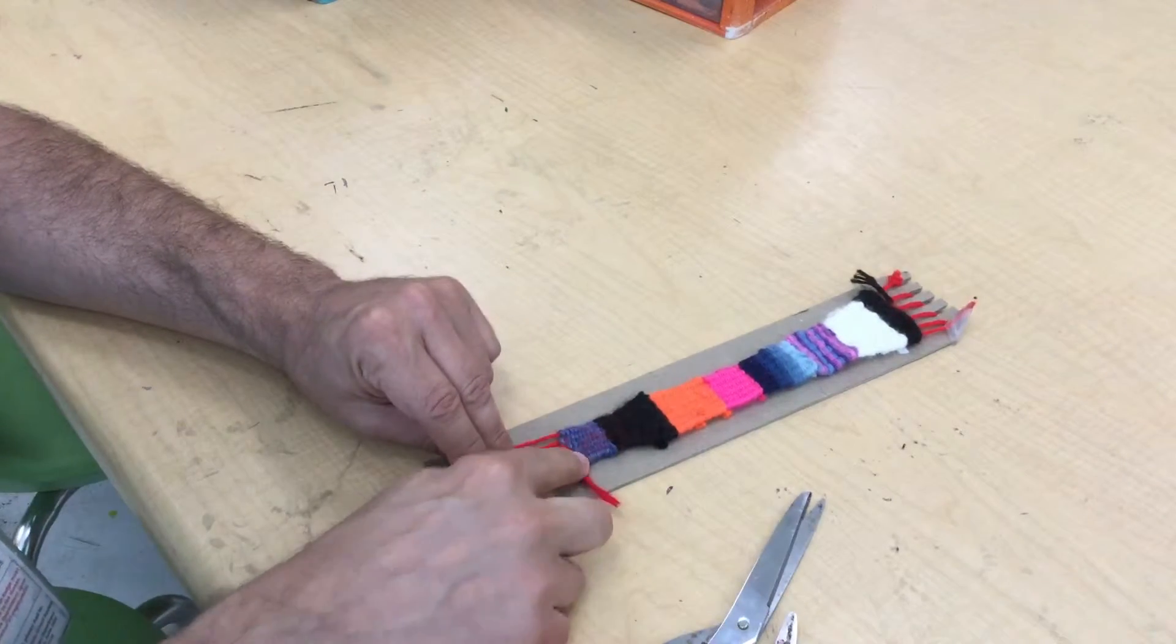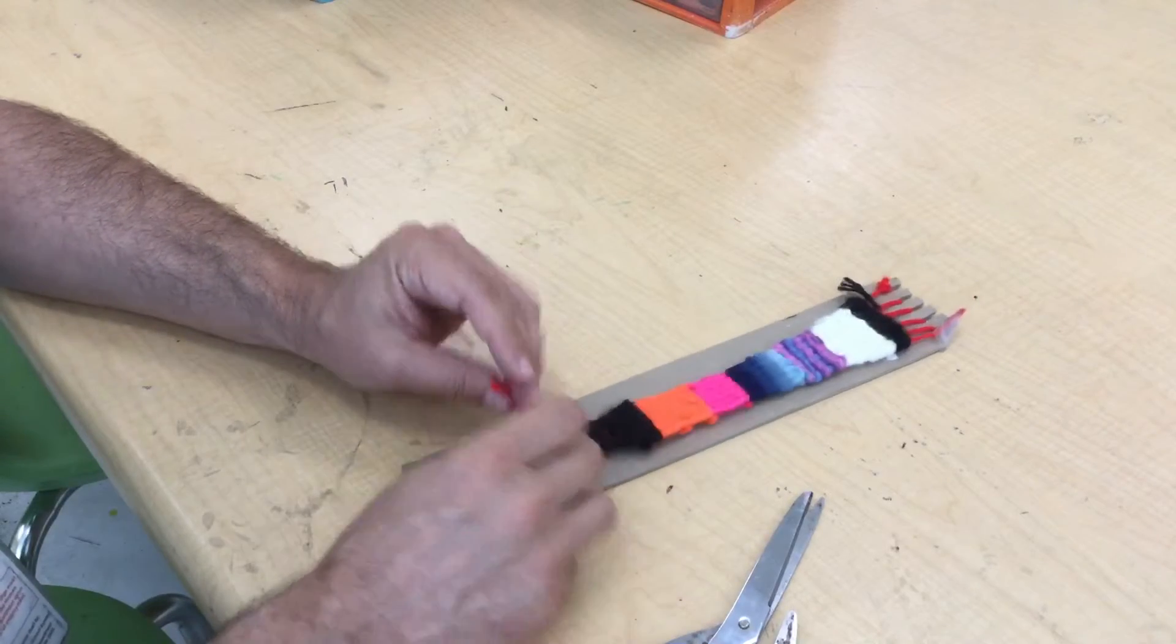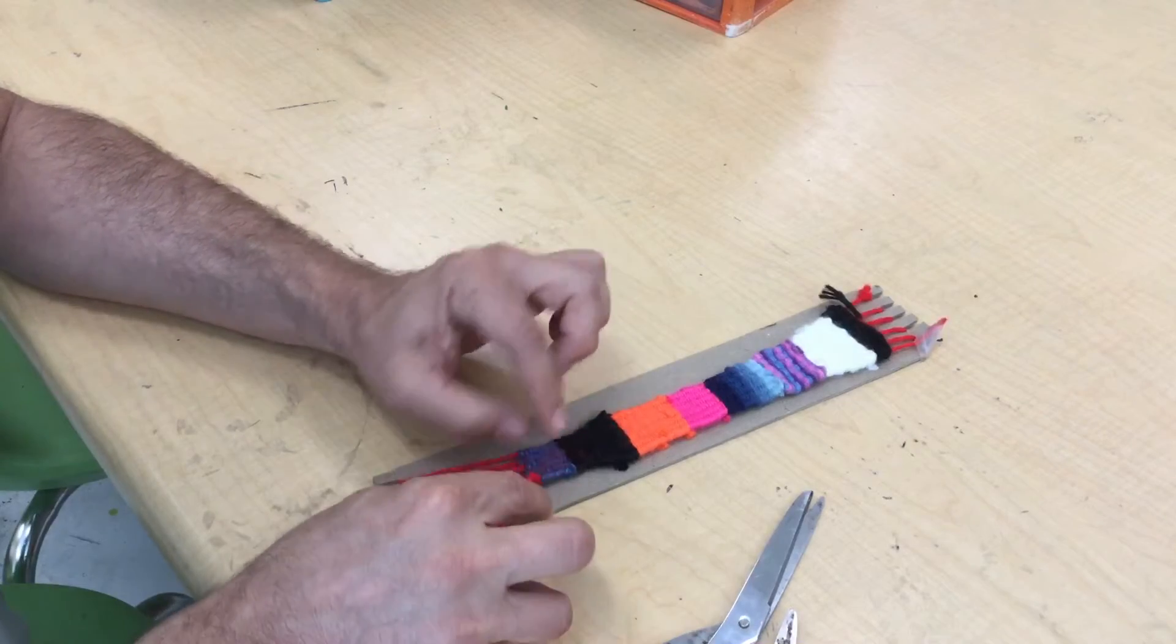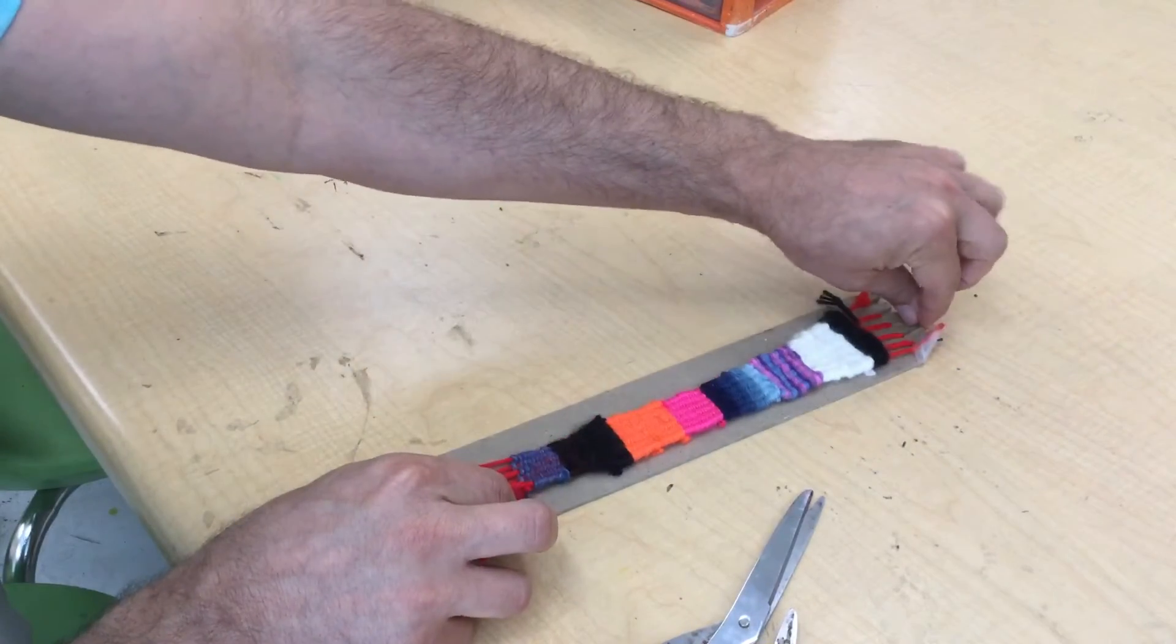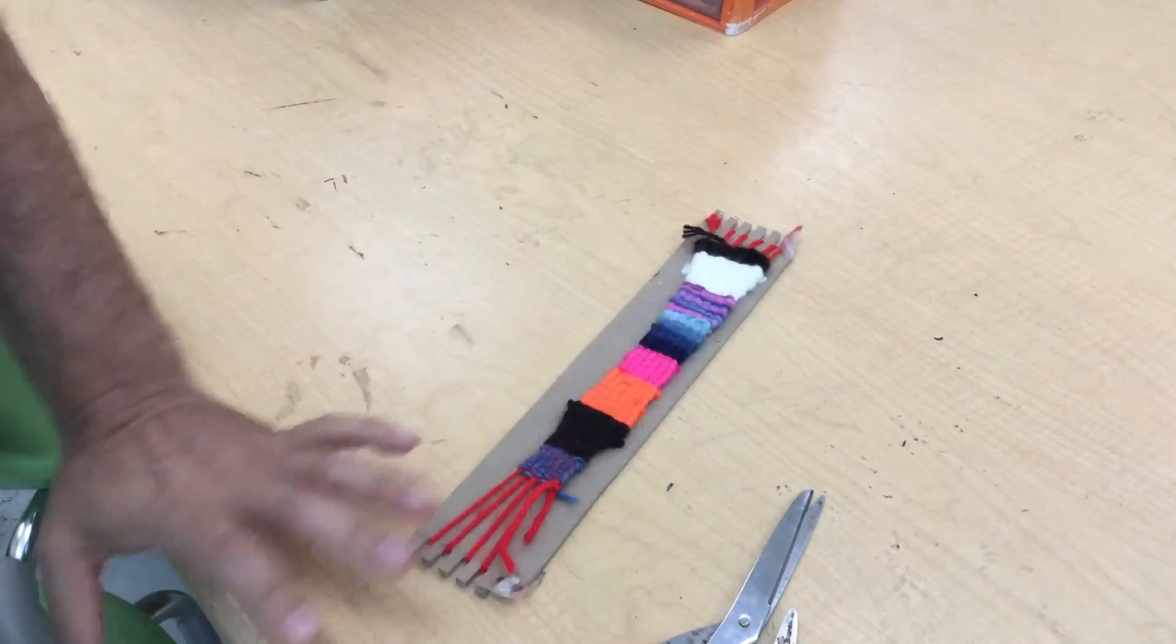And what's going to happen is this knot is going to hold all of this in your weaving. And then you'll be able to tie this knot to that knot if you want a bracelet, or you can have like a fringe. That's it.